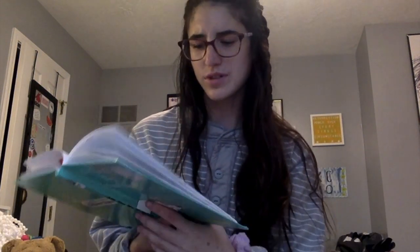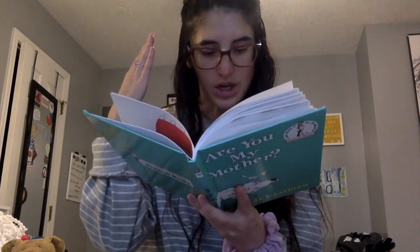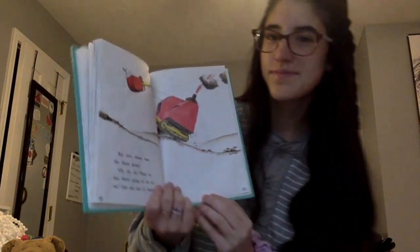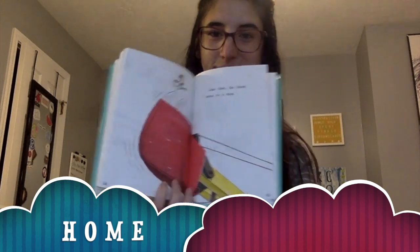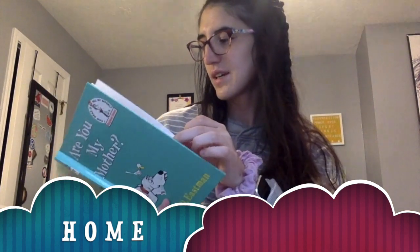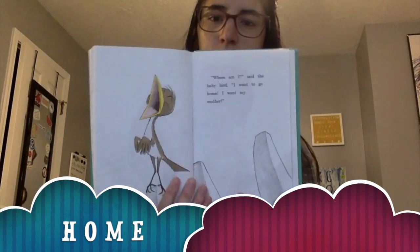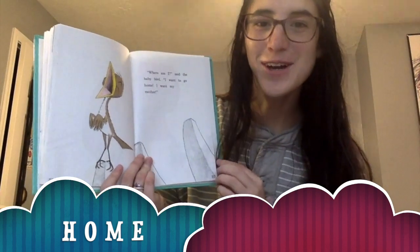But now where was the snort going? Oh, oh, what is the snort going to do? Get me out of here! Just then, the snort came to a stop. Where am I? said the baby bird. I want to go home. I want my mother. The sight word is home — H-O-M-E.